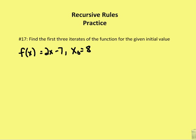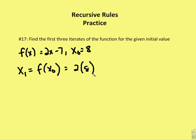In the final question, we're asked to find the first three iterates of the function for the given initial value. Remember, x sub 0 is not one of our first iterates — it's just an initial value. So I have x sub 0 equal to 8. My first iterate, x sub 1, is equal to f of x sub 0, which is 2 times 8 minus 7. 2 times 8 is 16, minus 7 is going to be 9.